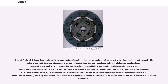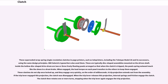In 1942, two employees of Pitney Bowes' postage meter company developed an improved single-turn spring clutch. In these clutches, a coil spring is wrapped around the driven shaft and held in an expanded configuration by the trip lever. When tripped, the spring rapidly contracts around the power shaft, engaging the clutch. At the end of one revolution, if the trip lever has been reset, it catches the end of the spring or a pawl attached to it, and the angular momentum of the driven member releases the tension on the spring. These clutches have long operating lives — many have cycled for tens or even hundreds of millions of cycles without need of maintenance other than occasional lubrication.